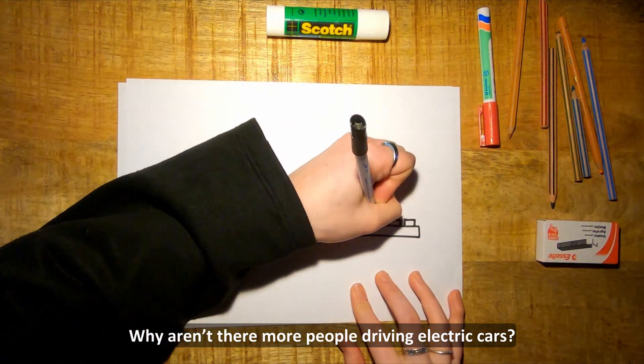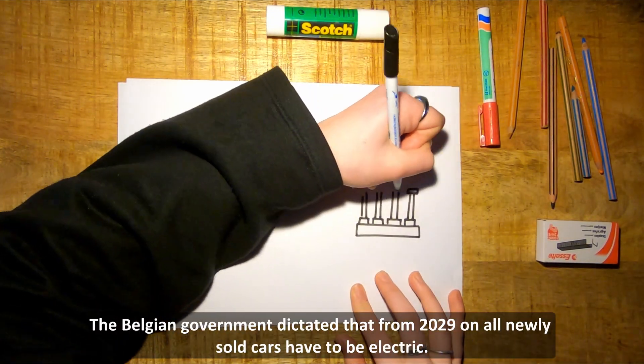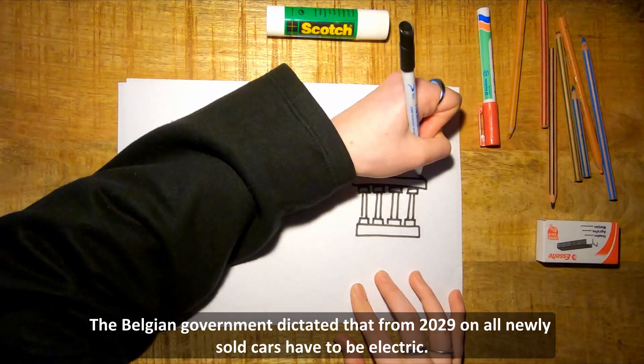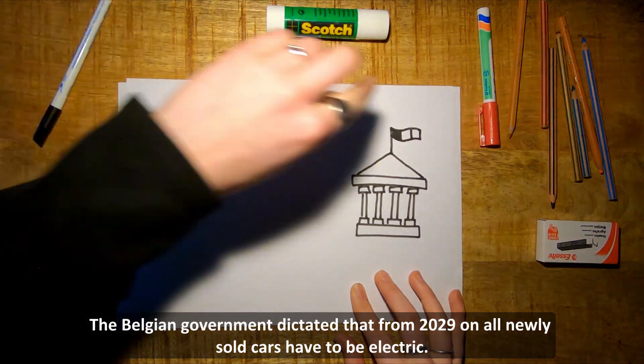Why aren't there more people driving electric cars? The Belgian government dictated that from 2029 on, all newly sold cars have to be electric.